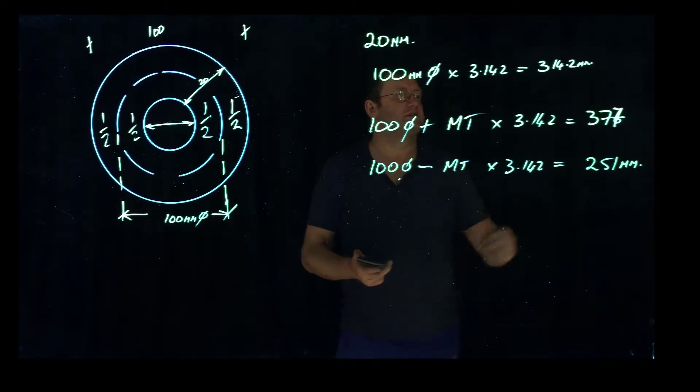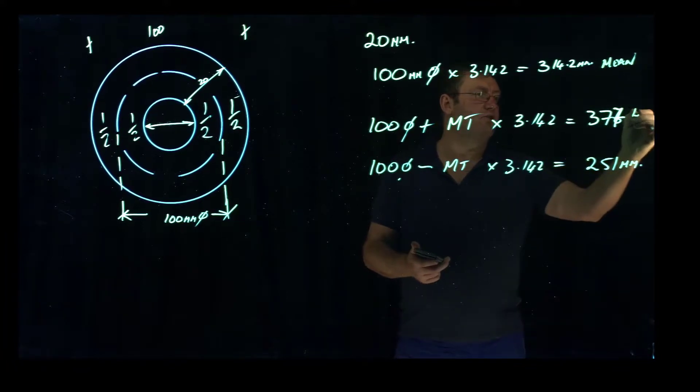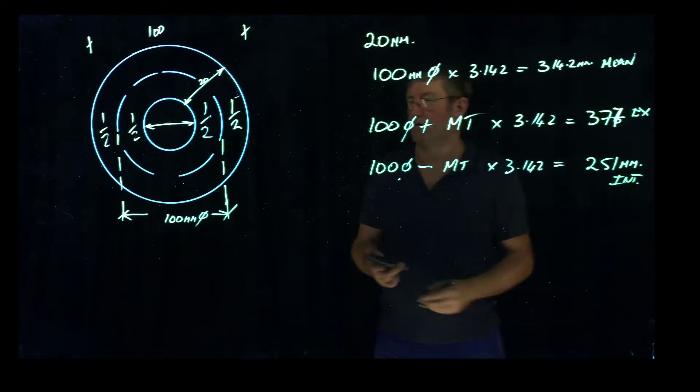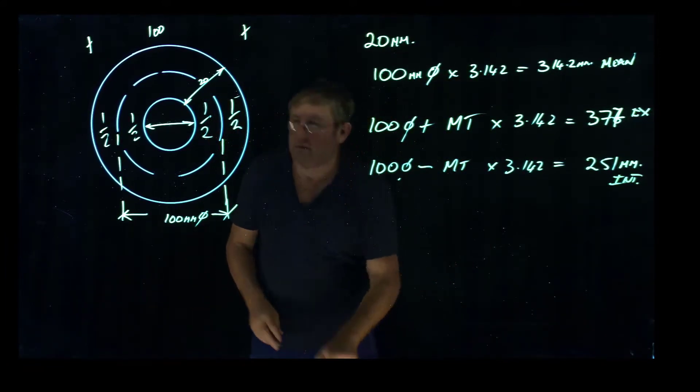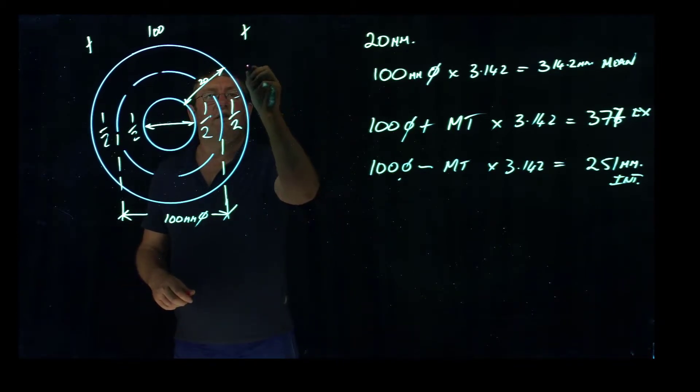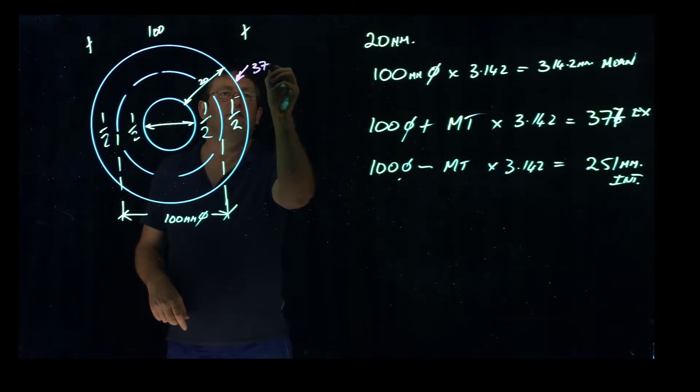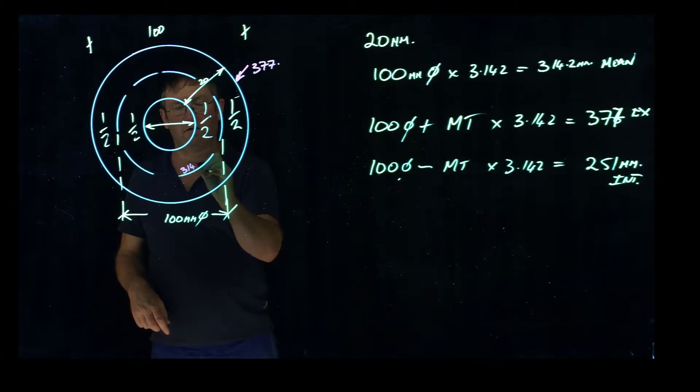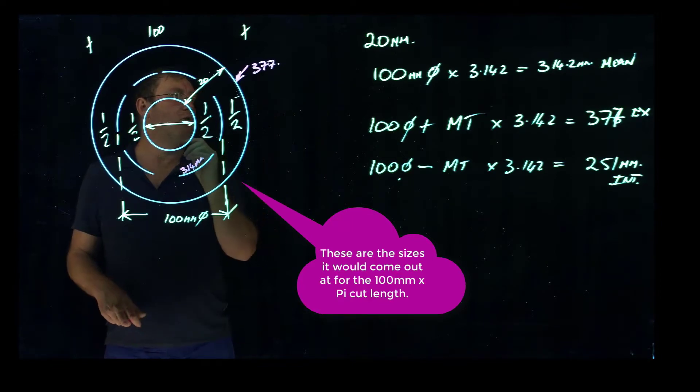So this is the mean diameter or mean circumference, this was the external, and this is the internal. If we go back to the ring, the distance around this line here is 377mm. The distance around this line here is 314mm, and the distance around the internal one comes out at 251mm.